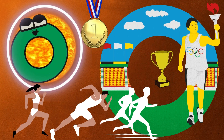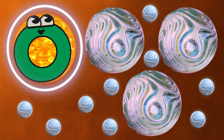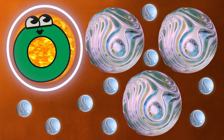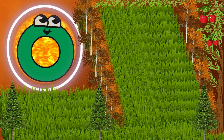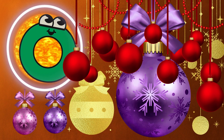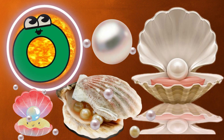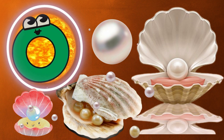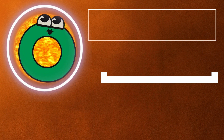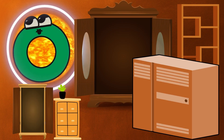O for Olympics. O for Opal. O for Orchards. O for Ornament. O for Overflow. O for Oyster. O for Outline. O for Organizer.